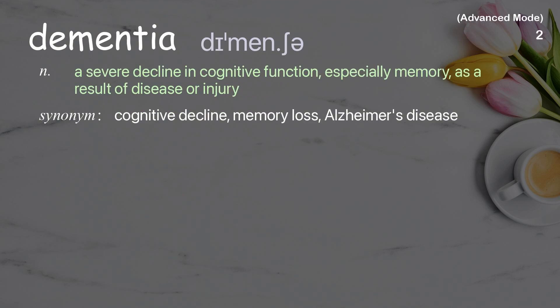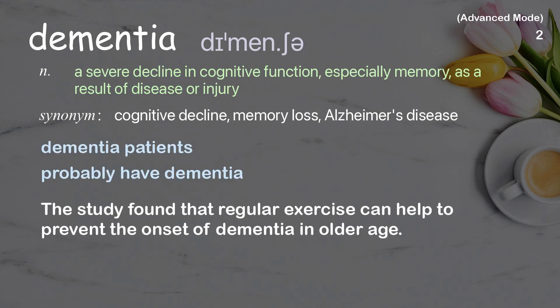Dementia: A severe decline in cognitive function, especially memory, as a result of disease or injury. Examples: Dementia Patients, Probably have dementia. The study found that regular exercise can help to prevent the onset of dementia in older age.